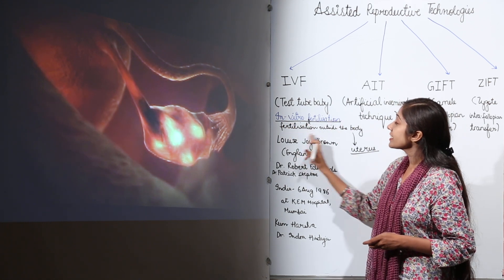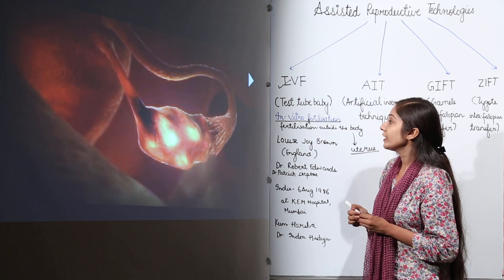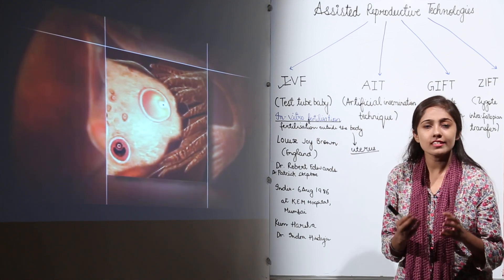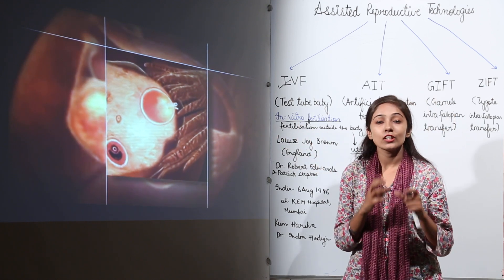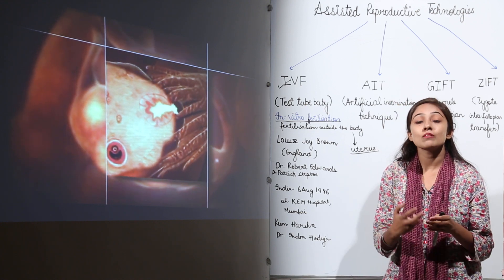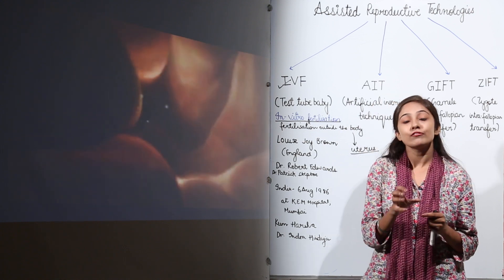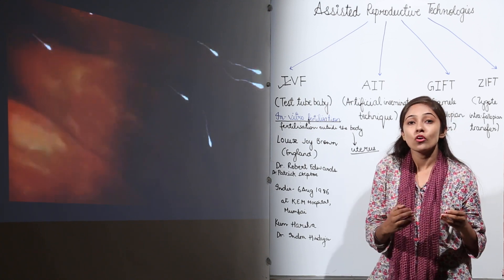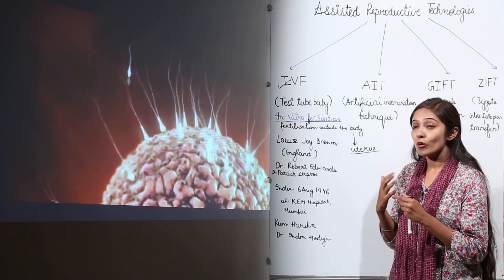Let's look at an animation of how in vitro fertilization actually takes place. During normal ovulation, the released egg goes inside the fallopian tubes and waits for sperm. Only one sperm fuses with the egg. After fusion, a zygote is formed, and the zygote slowly implants itself inside the uterine wall. This is how the natural process works.